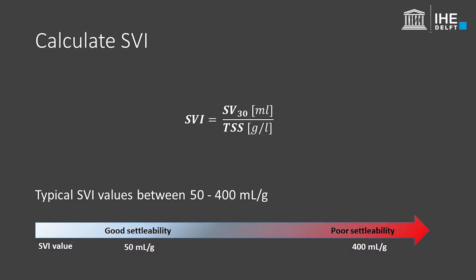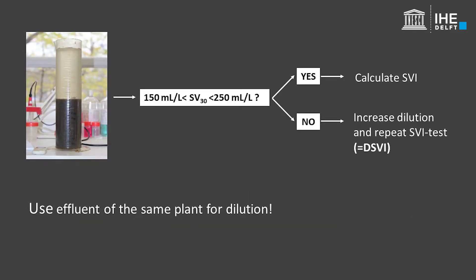If the measured volume after 30 minutes of settling is not between 150 and 250 millilitres, it is recommended to redo the test by either diluting or concentrating the sludge until the final volume is situated between the boundaries of 150 to 250 millilitres per litre. This is then called a diluted SVI test.